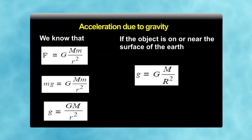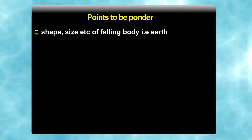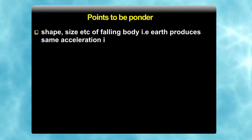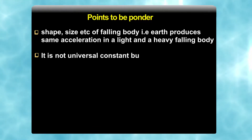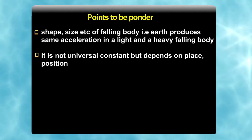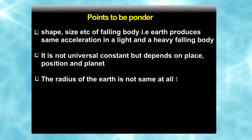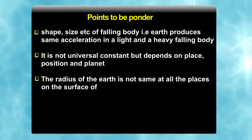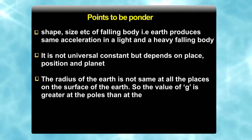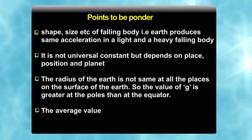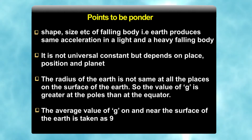The expression g = GM/R² shows that g is independent of the shape, size, and mass of the falling body — meaning earth produces the same acceleration in both light and heavy falling bodies. However, g is not a universal constant; it depends on place, position, and planet. The radius of earth is not the same at all places, so the value of g is greater at the poles than at the equator.